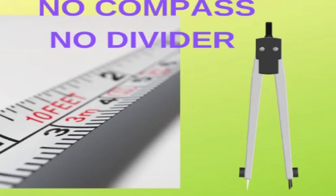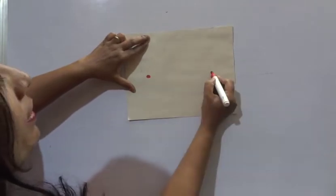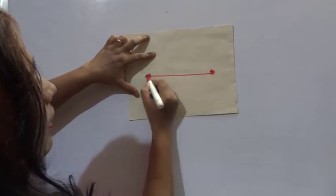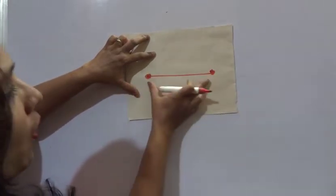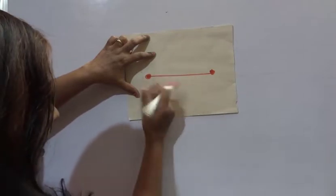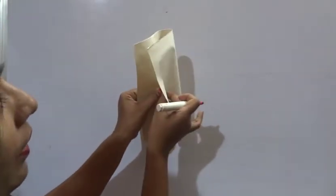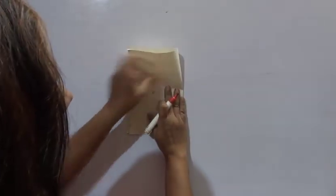Is it possible to draw a line bisector without using straight edge and compass? Let us try. I have two points and a straight line here. Now we have to draw a bisector of this line AB without using compass or divider and straight edge. Now let us take these two points and join them and make a crease here.